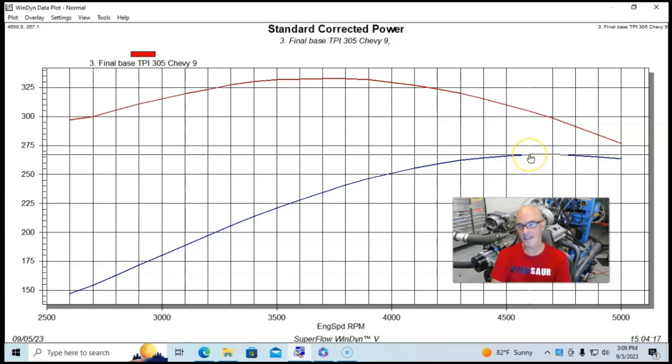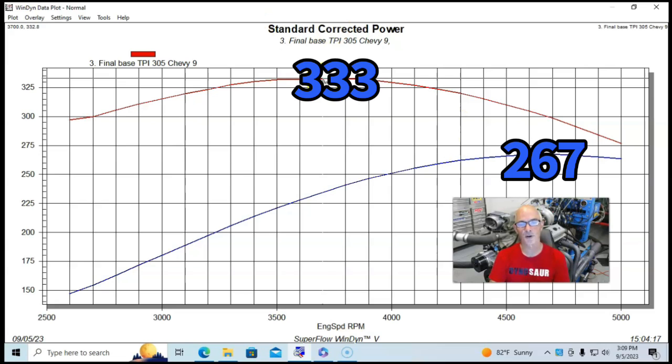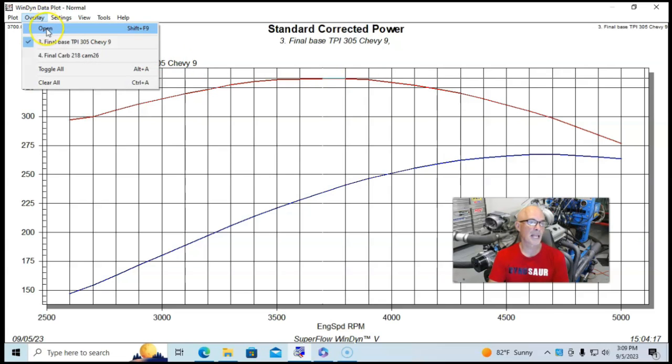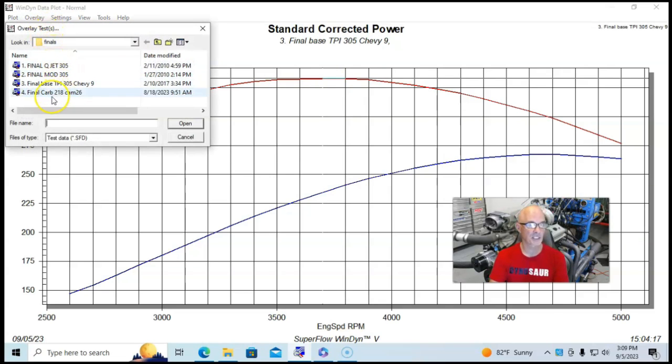So, we're looking at, in non-modified form, except for the headers, 267 horsepower, 333 foot-pounds of torque. But now let's take a look and see what happened when we made modifications to this combination.